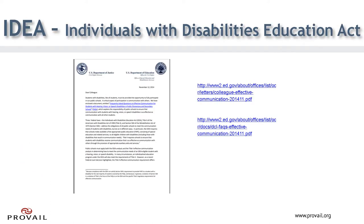Another piece of legislation was passed that defines assistive technology within the context of the education system. This legislation is called IDEA, Individuals with Disabilities Education Act. In 2014, the Department of Justice came out with an explanation of roles and responsibilities of school districts in terms of communication and access to education. Generally, students with disabilities must have the opportunity to fully participate in public schools. Public schools are required to comply with these laws. The links provided here lead to more information on the rights of students with a disability and the responsibilities of schools as it applies to access to education and communication within that setting.